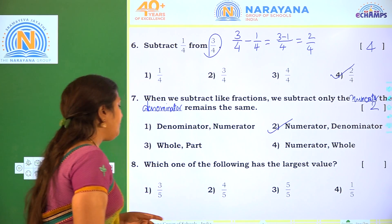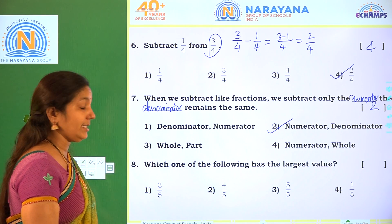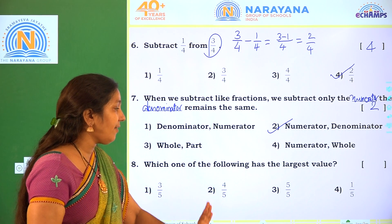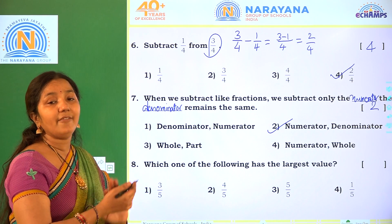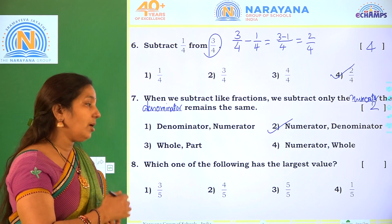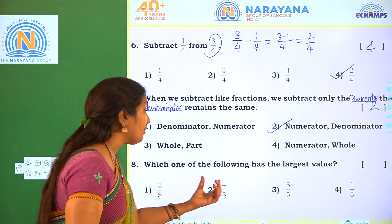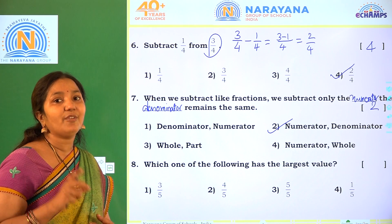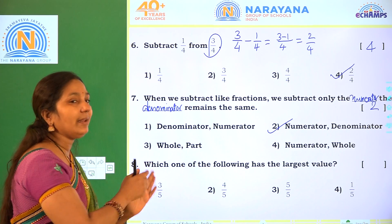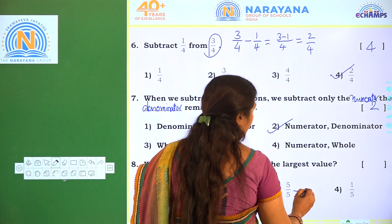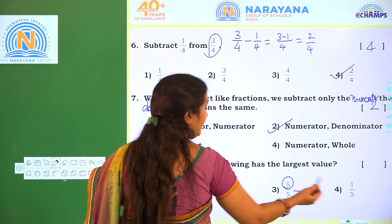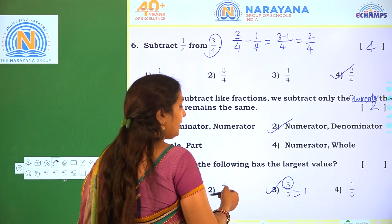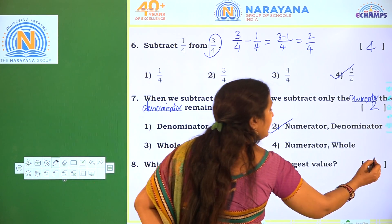Next one. Which one of the four fractions has the largest value? So here we have 3 by 5, 4 by 5, 5 by 5, and 1 by 5. All fractions have 5 as the denominator, so which numerator is greater? 3, 4, 5, 1 — 5 is the greatest. 5 by 5 is nothing but one whole part. One whole part is greater than the remaining fraction parts. So 5 by 5 is the largest value, and Option 3 is the correct one.